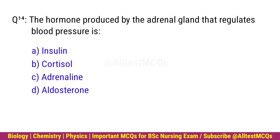Q14. The hormone produced by the adrenal gland that regulates blood pressure is? Right option is D. Aldosterone.